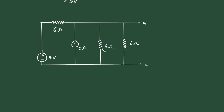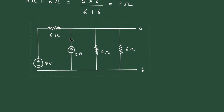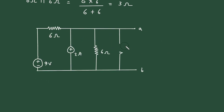Now here we can see this 6 ohm and this 6 ohm are connected in parallel. We will simplify: 6 ohm parallel with 6 ohm is equal to 6 into 6 divided by 6 plus 6, which is equal to 3 ohm. We will erase this one, so it will be 3 ohm.